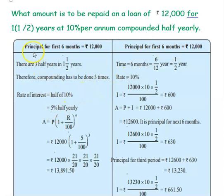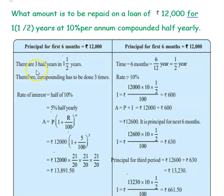Let us see how to do this. The principal for the first six months — since it is compounded half yearly, we are going to do it half yearly: for first six months and then for the second six months. So in one year, you will have two six-month periods. There are three half years in one and a half years. So, 1 into 2 is 2, 2 plus 1 is 3 — that is 3 by 2 years totally, so you will have three half years, and the compounding has to be done three times.